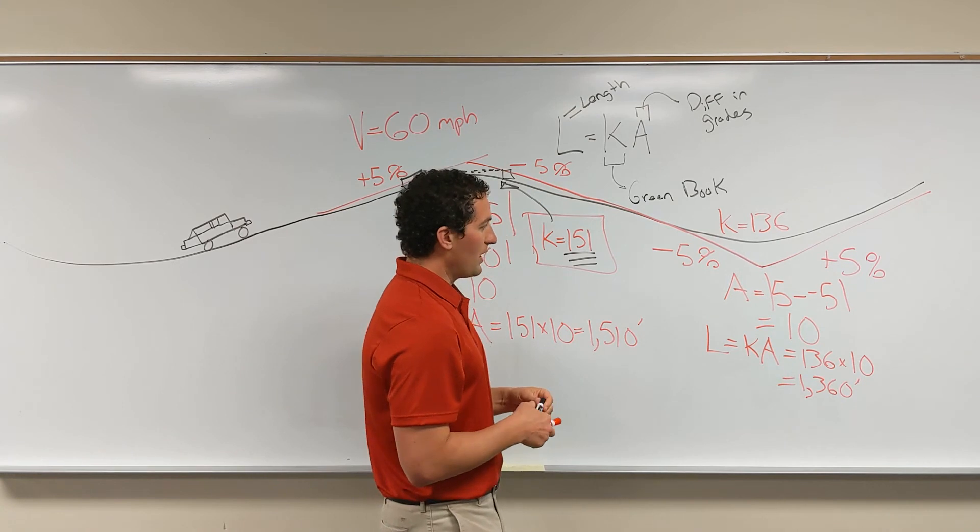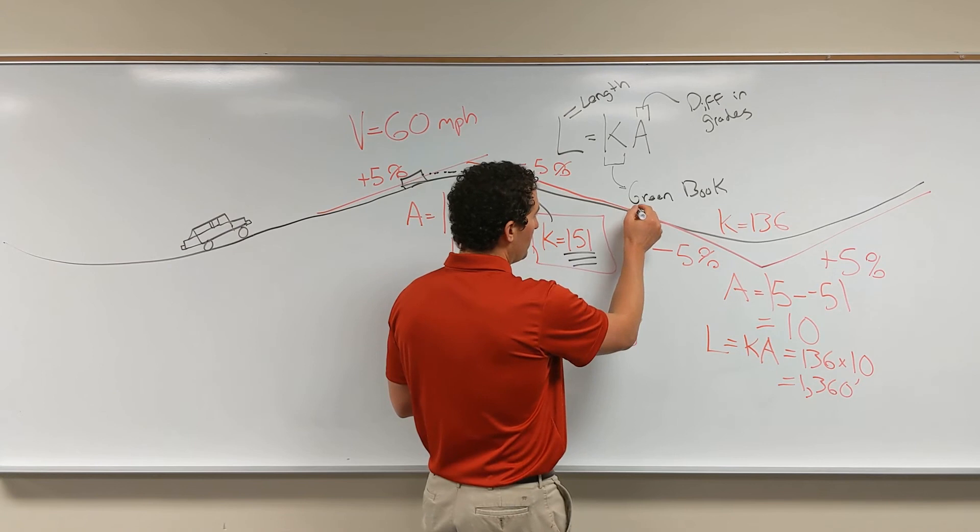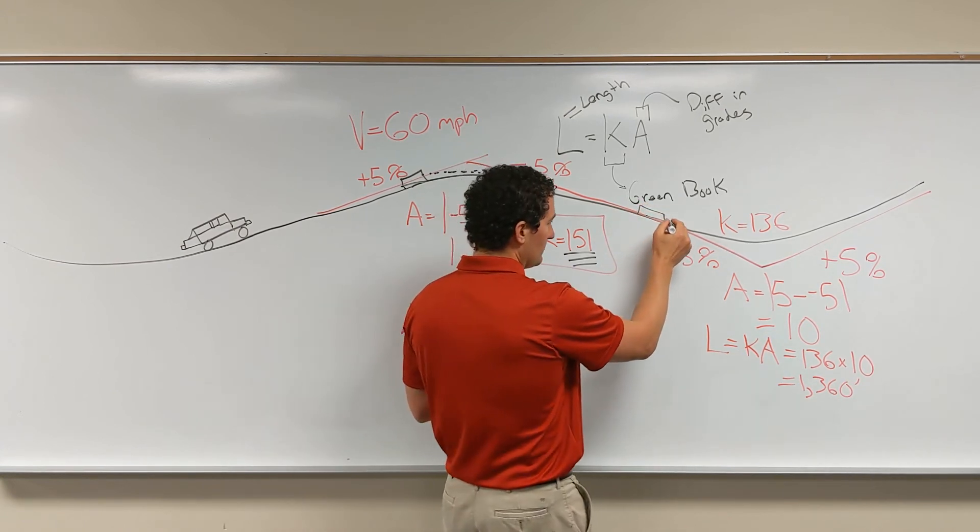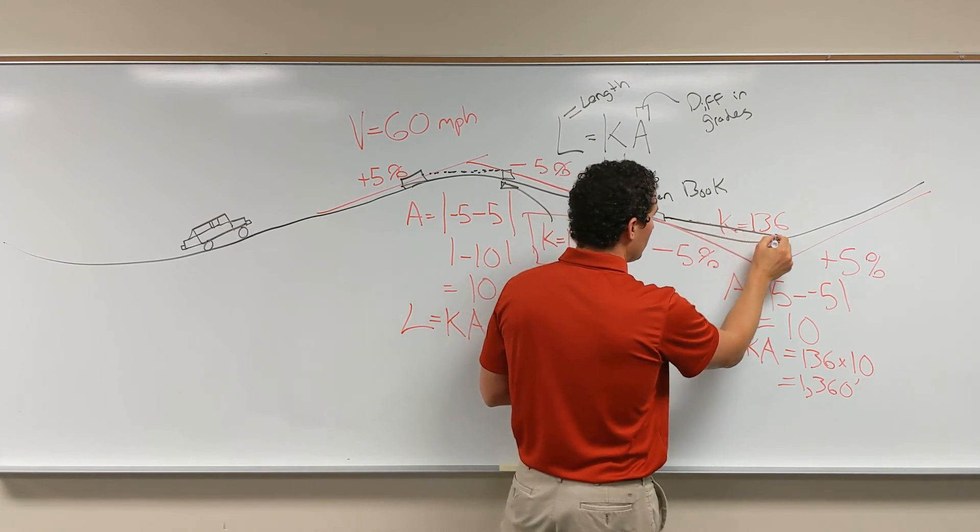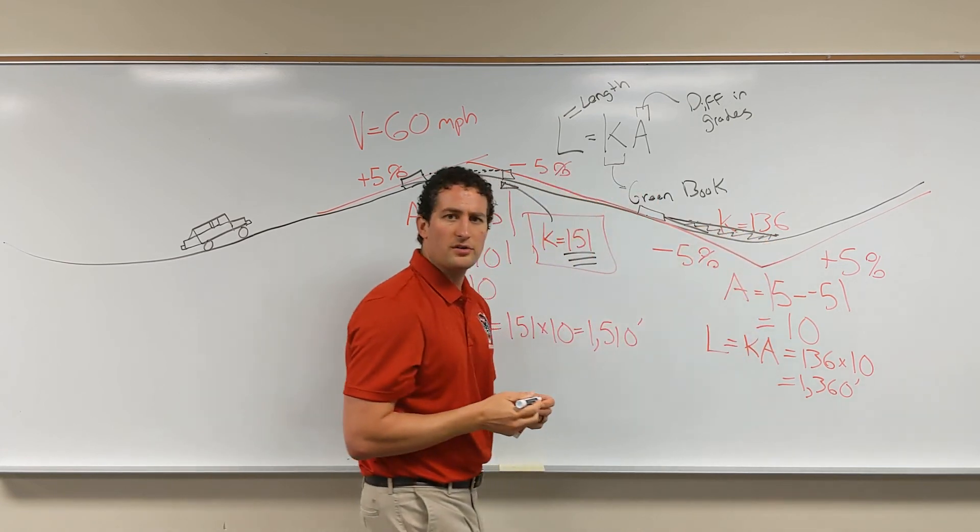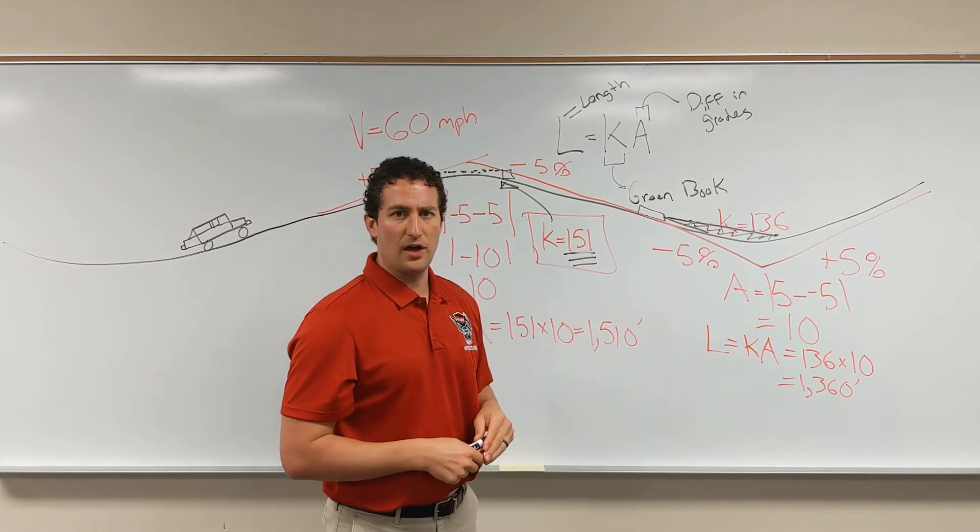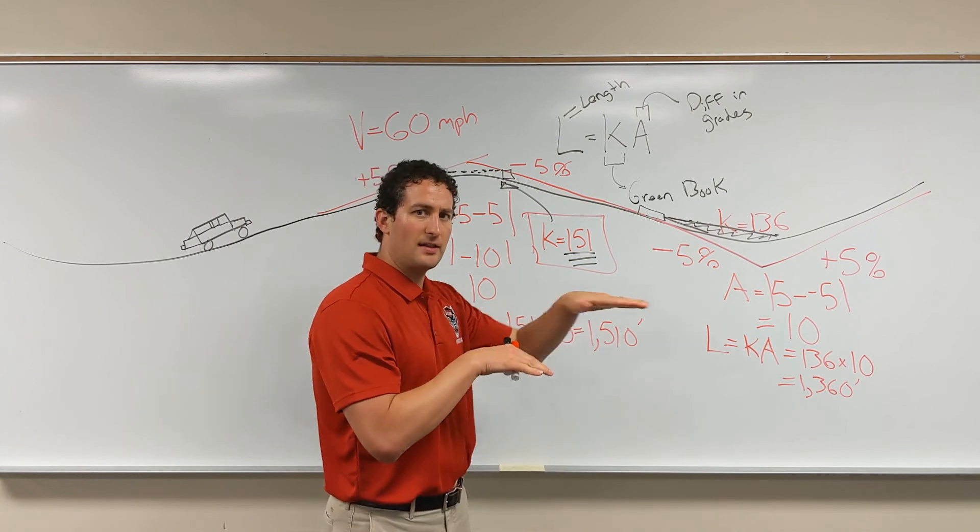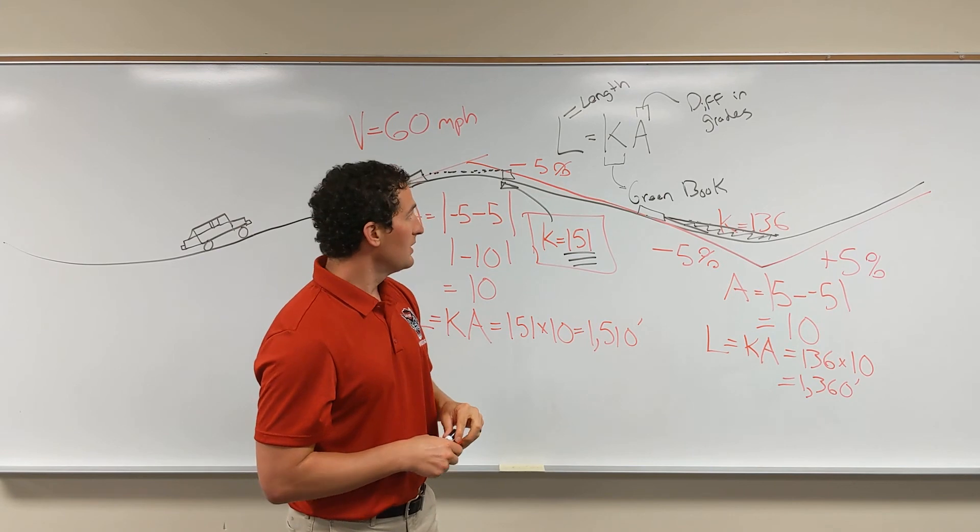And the scenario for a sag curve is we're worried about nighttime, and we're actually worried about as the vehicle is driving along, where does its headlights shine? Where is the roadway going to be illuminated so that the driver can see any hazard on the other slope? So what we're worried about is having enough length so that our headlights can see far enough in front of you so that the driver can respond to any hazard.